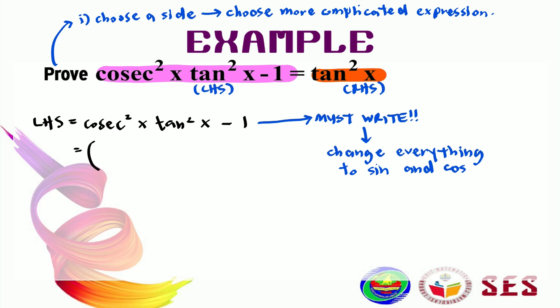Cosecant x is equal to 1 over sine x. I'm going to put the square outside. And then, tan x is equal to sine x over cos x. And again, I'm going to put the square outside. Minus 1. If I put the power back in, I'm going to get 1 over sine squared x multiplied by sine squared x over cos squared x minus 1.